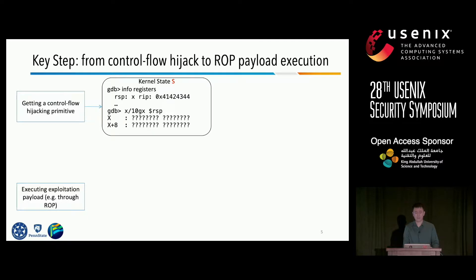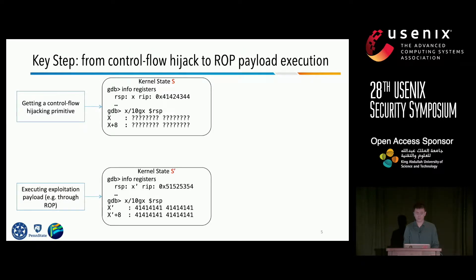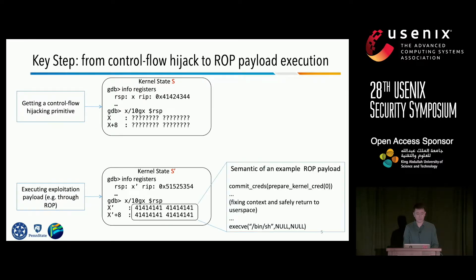To answer the question, let's take a closer look at a key step during exploitation. On one hand, at the site of the control flow hijacking, as shown in kernel state S, the program counter is under our control, but the stack pointer is not. On the other hand, to use return oriented programming to execute payload, we have to construct a new kernel state S prime. In the new kernel state, not only the program counter but also the stack pointer is controllable, so we can execute raw payload to escalate privilege to root, fix memory corruption, safely return to user space, and launch a root shell.